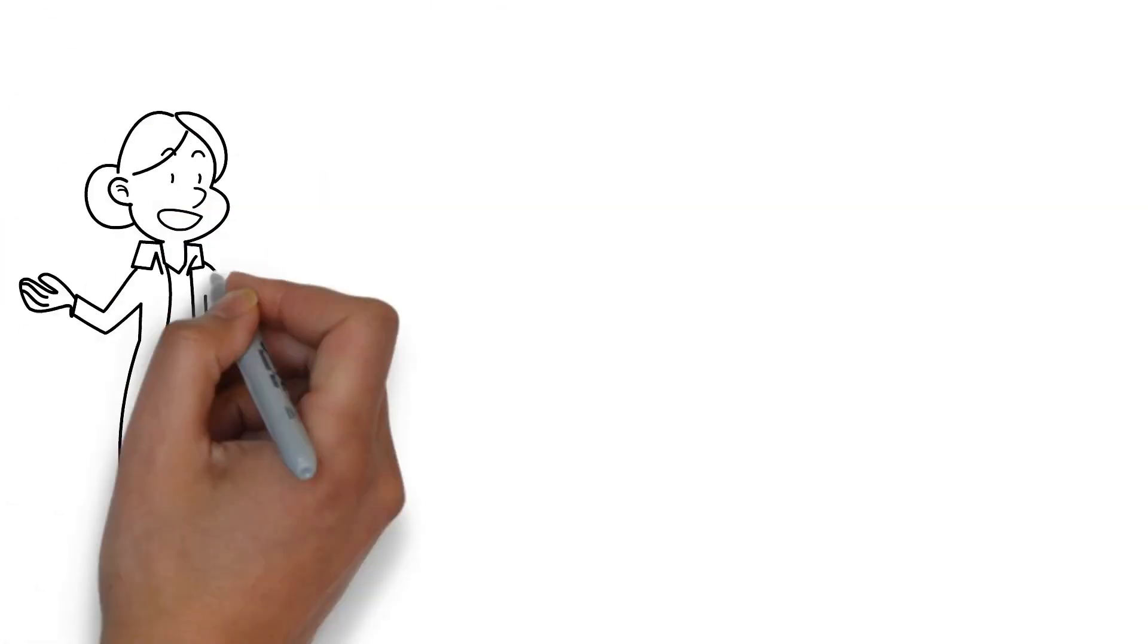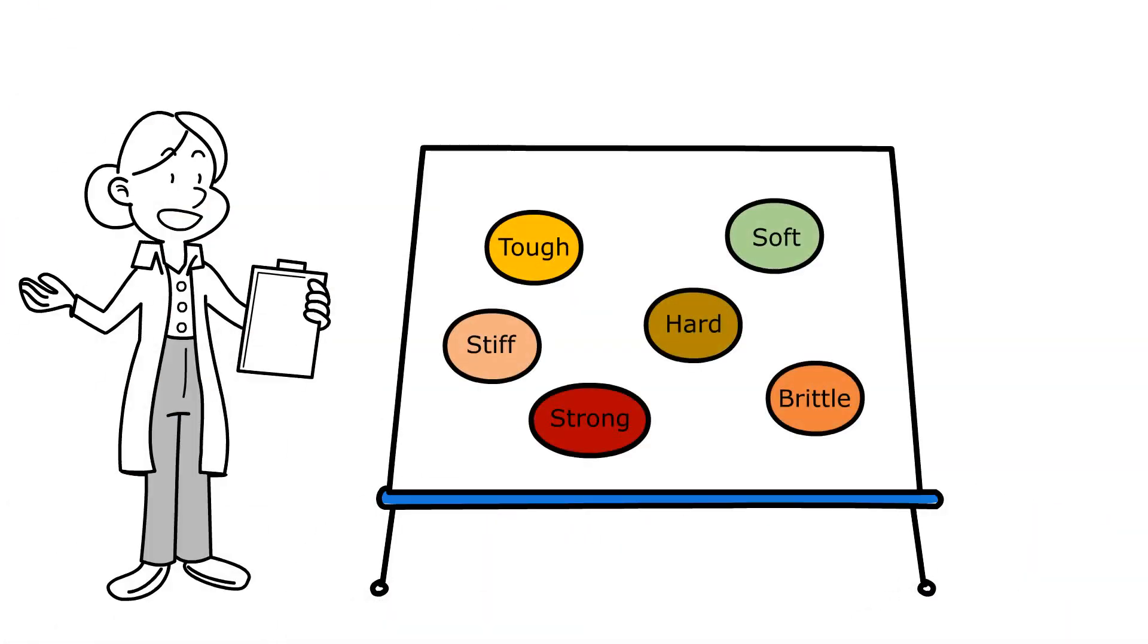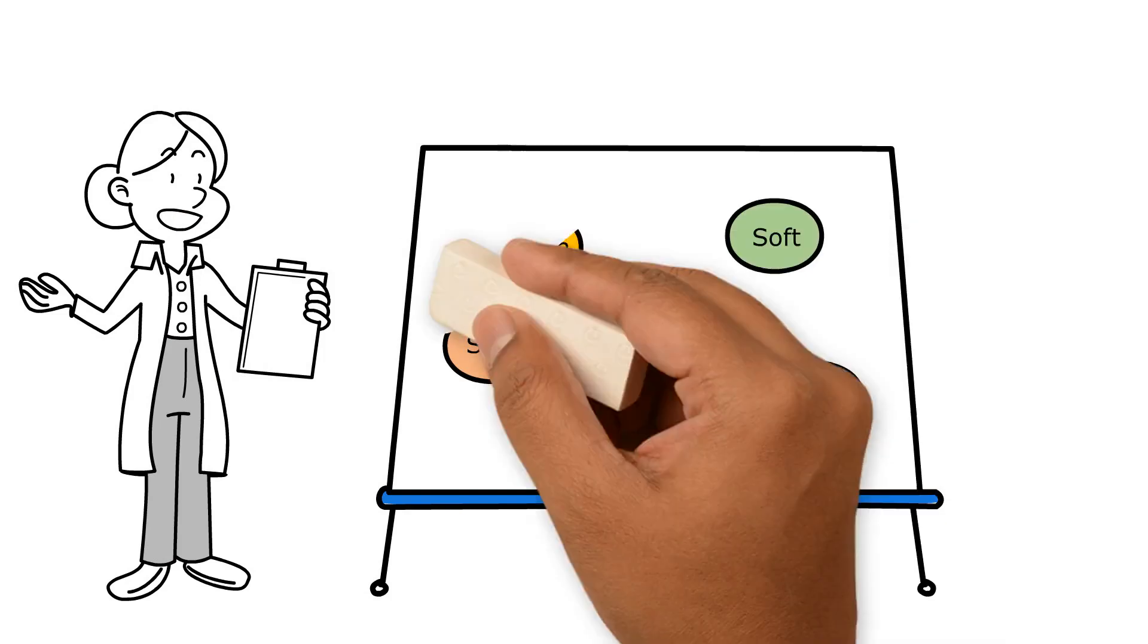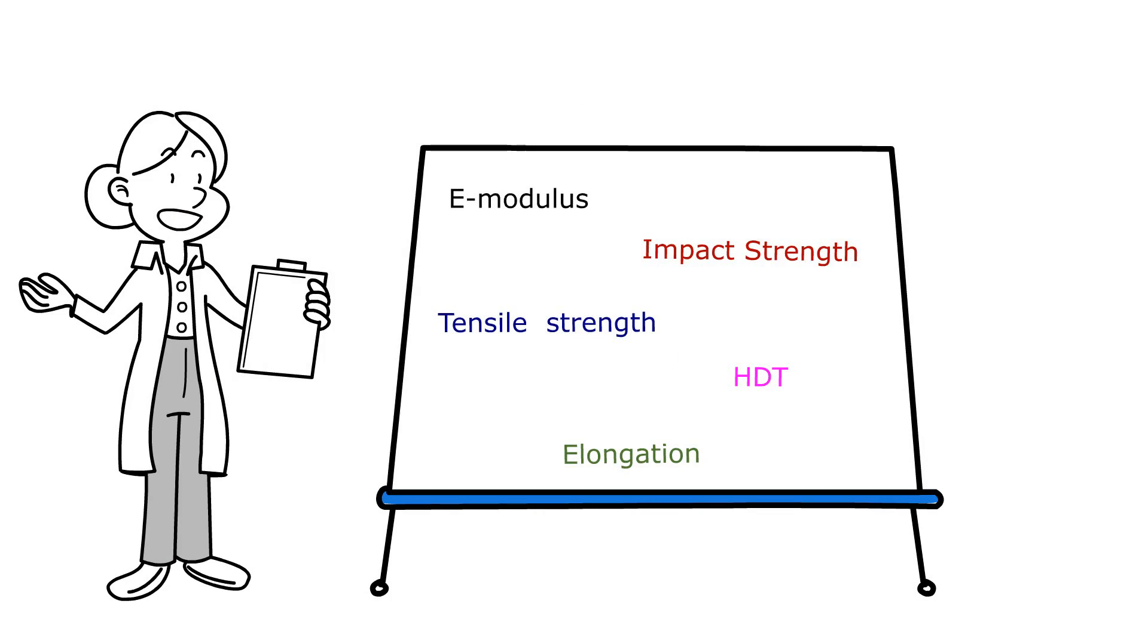So now, we can describe the polymer's properties more scientifically and with values rather than with qualitative labels like stiff, hard, soft, or brittle. Now we can talk about E modulus, tensile strength, elongation, etc.